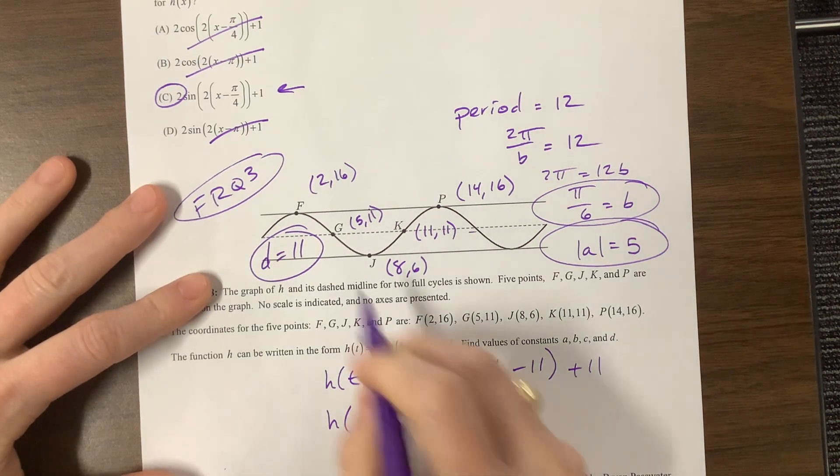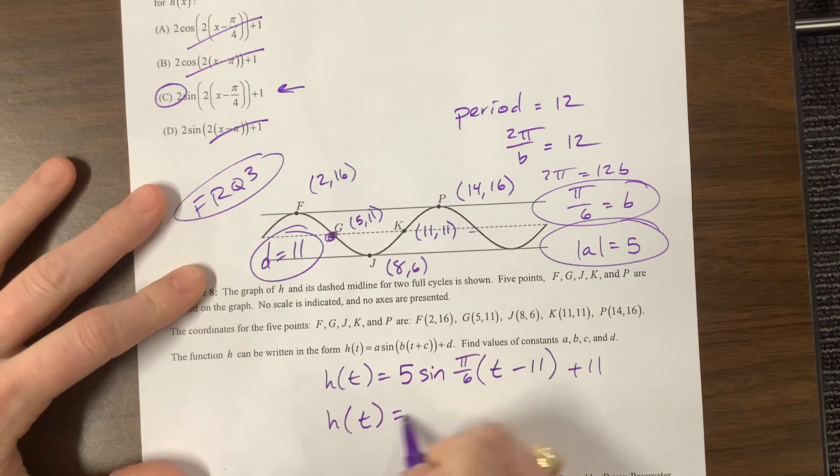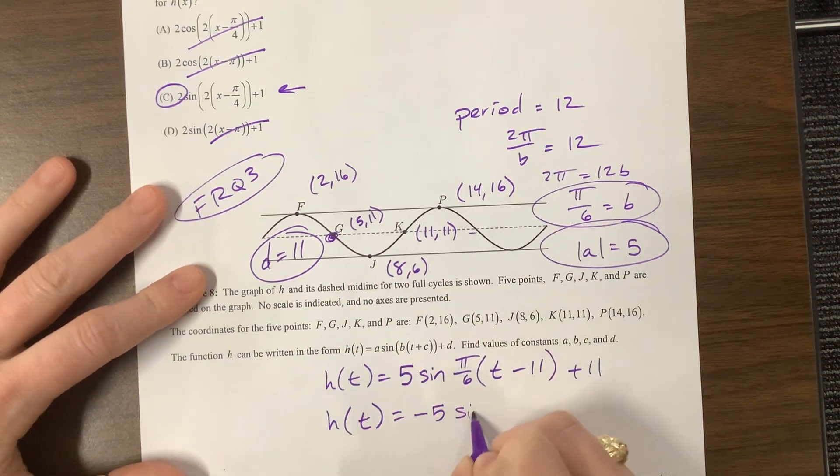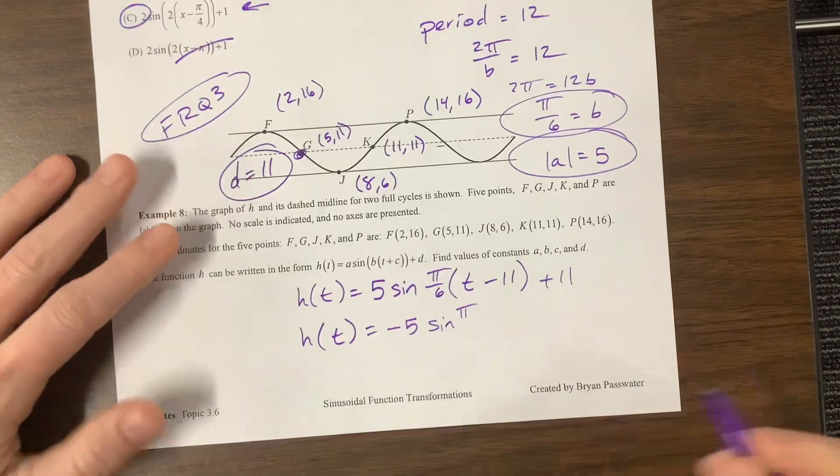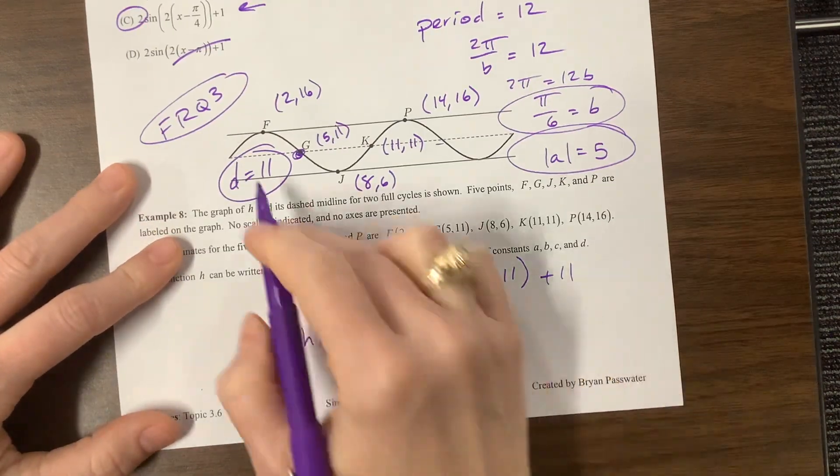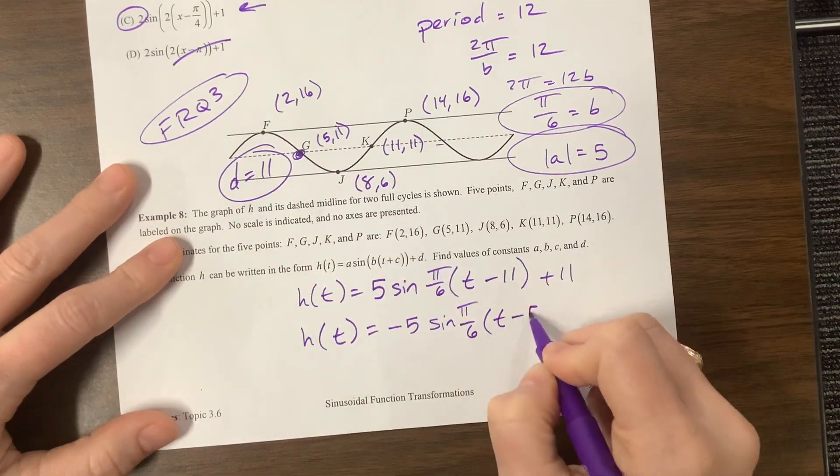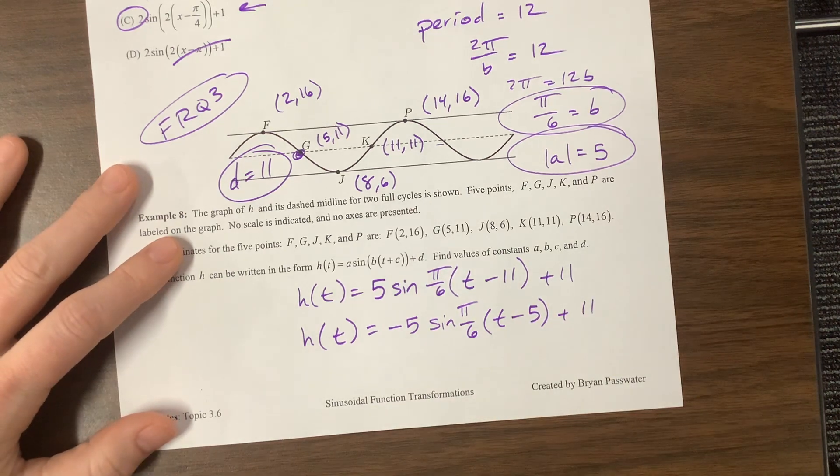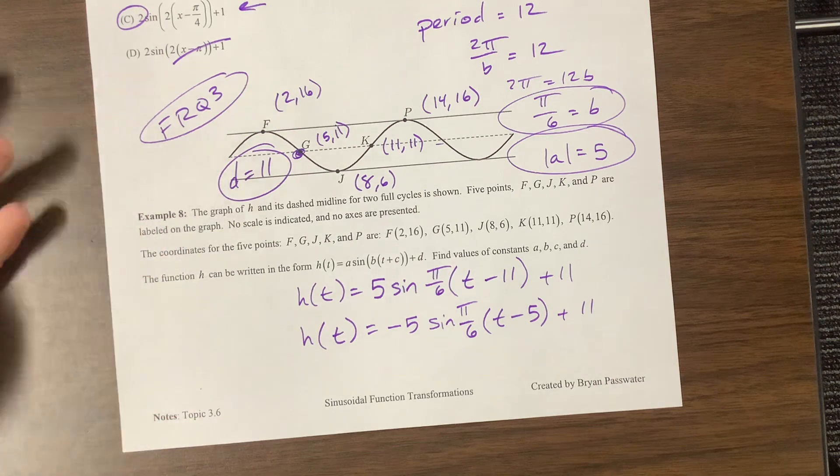Or I could start at this point right here. If I do though, I now have to make it negative so that I go down first. And then I still have this pi over 6, and now I have shifted how much? I've shifted to the right 5. And so those are two good equations, just using the points that they gave us.